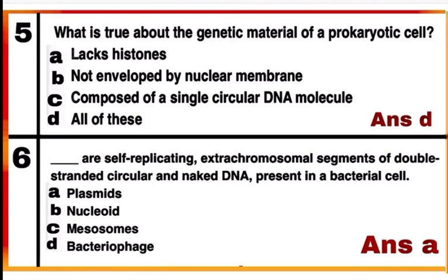Question 5: What is true about the genetic material of a prokaryotic cell? All options A, B, and C are true: it lacks histones, it is not enveloped by a nuclear membrane, and it is composed of a single circular DNA molecule. So option D — all of these — is correct.